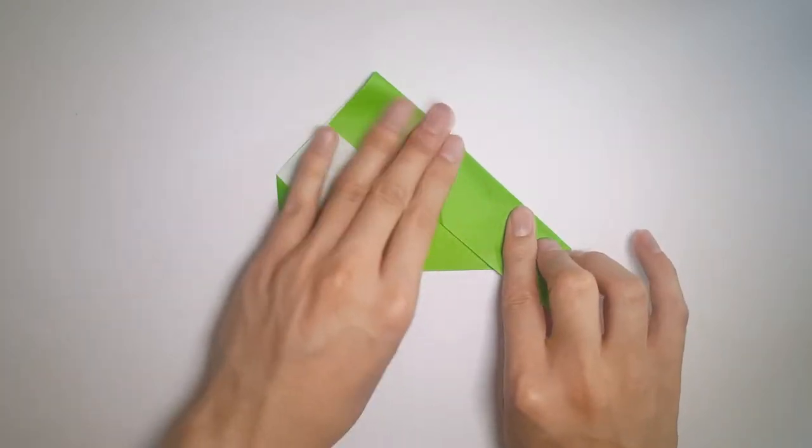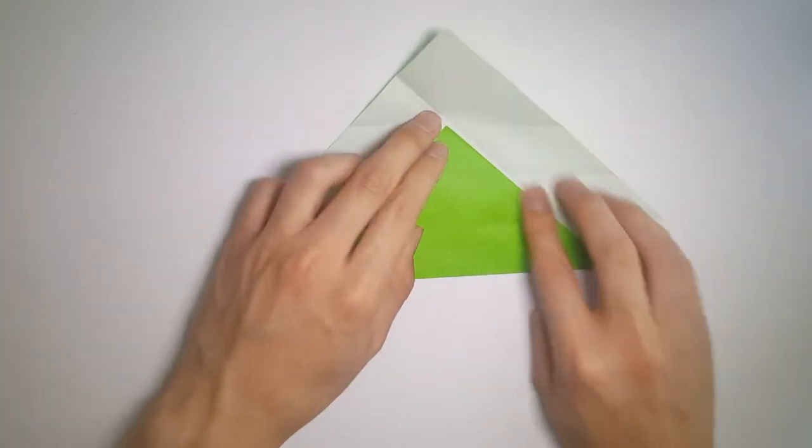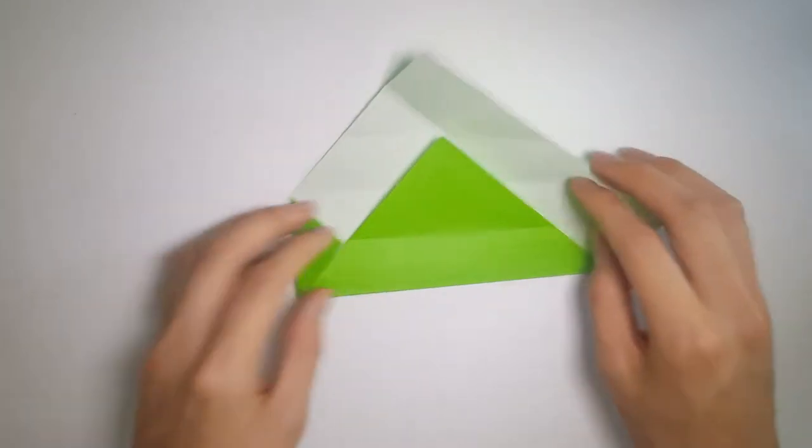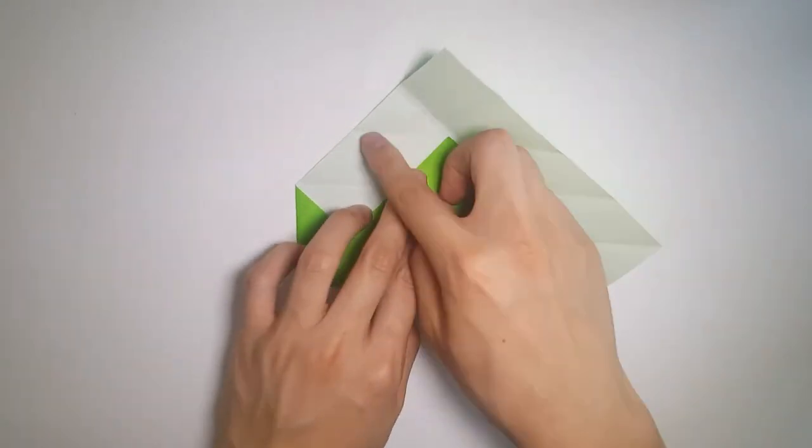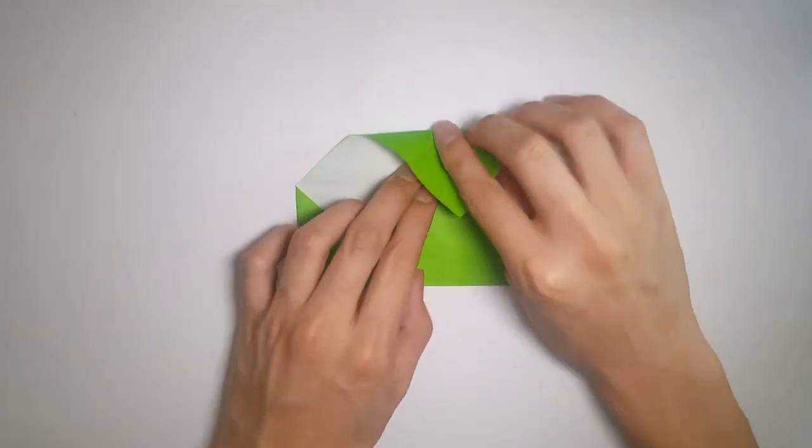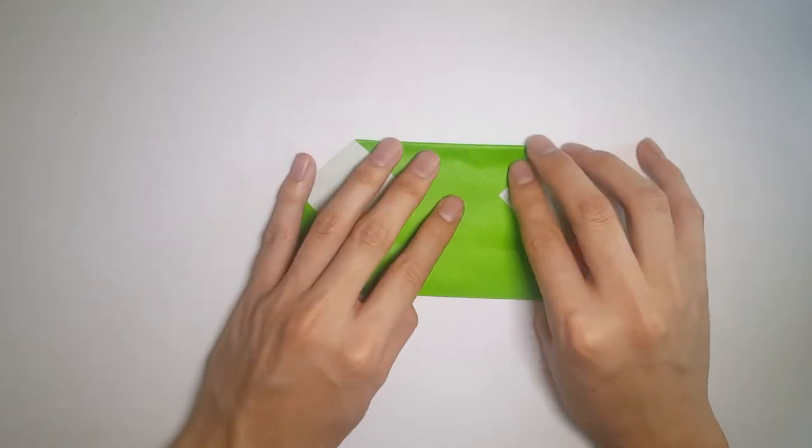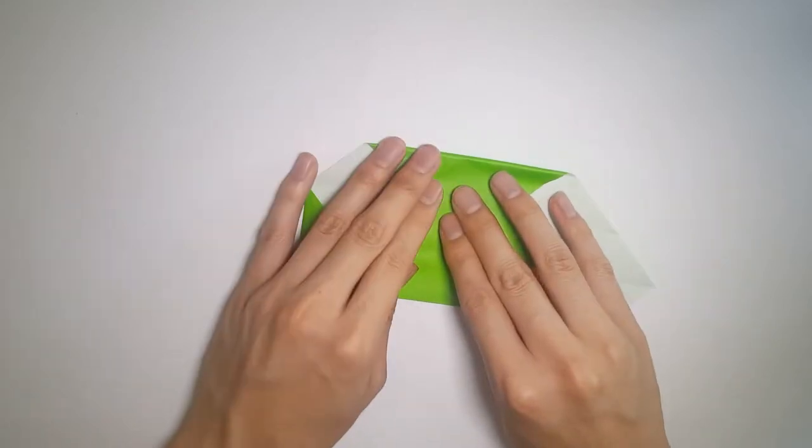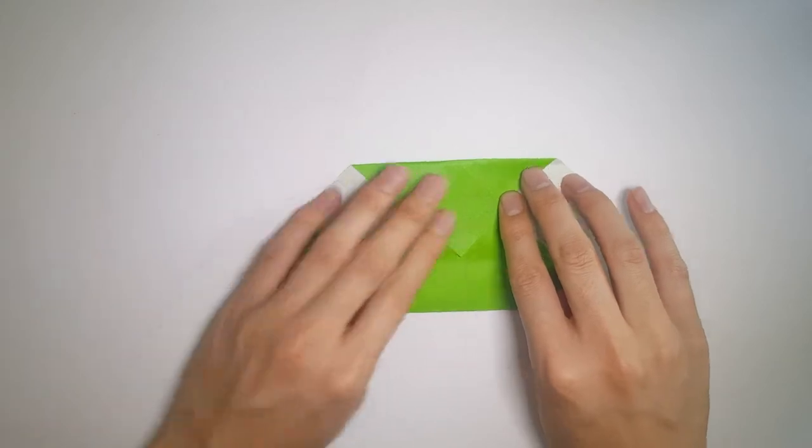Now what we want to do is make a horizontal crease with the top corner, bringing it down. To help you with this, you can look at the small creases we've made before, and it should align with the bottom triangle.